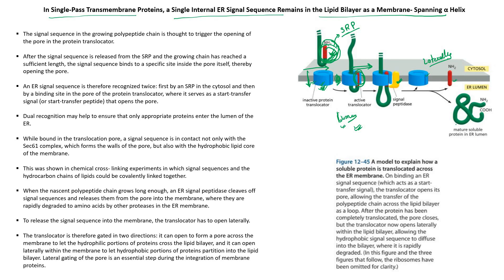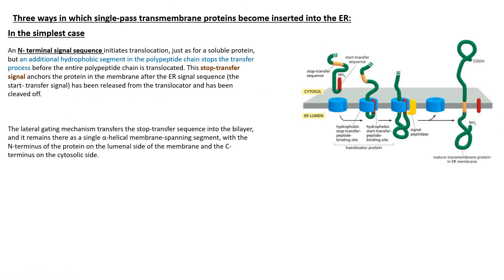That is the mechanism for soluble proteins entering the ER lumen. But what is the mechanism for membrane proteins in the endoplasmic reticulum membrane? Membrane proteins are basically of two types: single-pass transmembrane proteins and multi-pass transmembrane proteins. The mechanism of membrane integration is different for single-pass versus multi-pass transmembrane proteins.